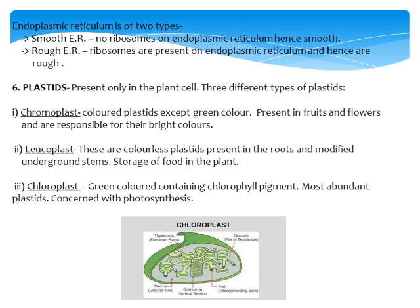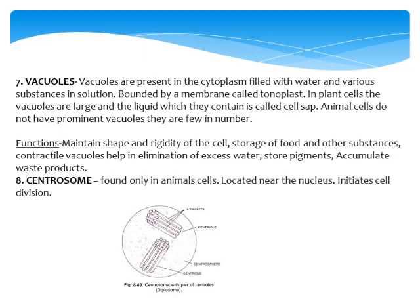Vacuoles are present in the cytoplasm and are filled with water and various substances in solution — including starch, proteins, and some pigments. Vacuoles are bounded by a membrane called the tonoplast — a very important term that can be asked as a question. In plant cells, vacuoles are very large and the liquid they contain is called cell sap.